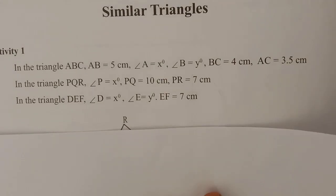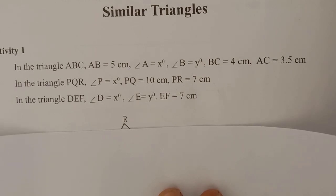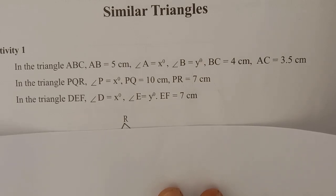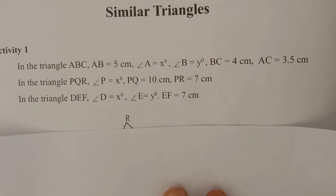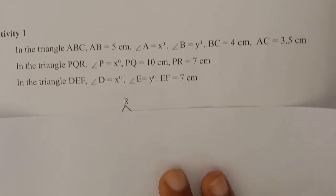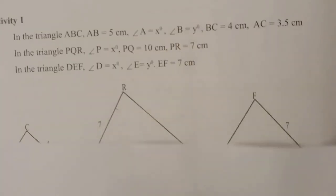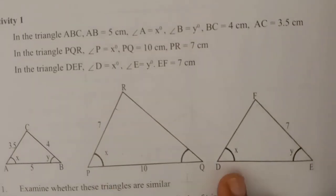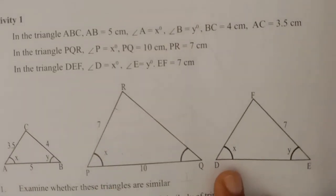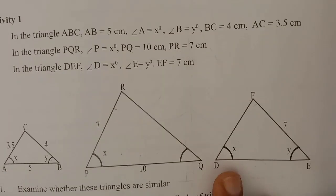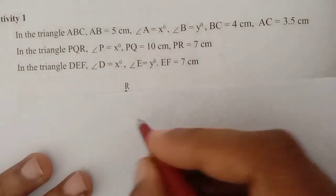Welcome to the 9th Worksheet of Similar Triangles, Unit 7. The 3 triangles are similar. Similar angles are similar. We have 3 properties.